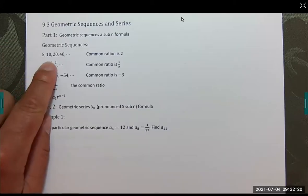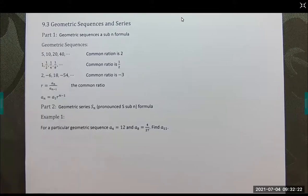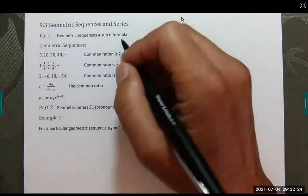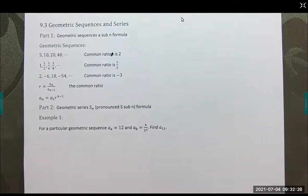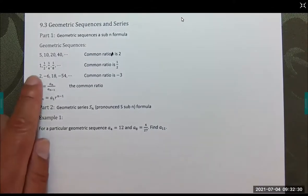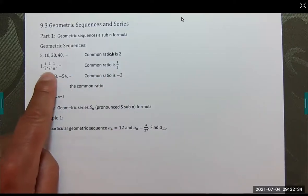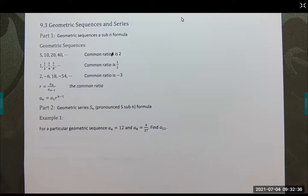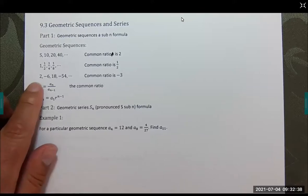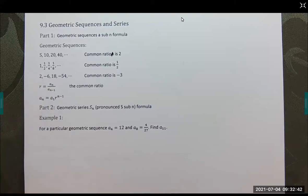Some examples of what a geometric sequence even is. You can see I'm multiplying by 2 each time. What we call a common ratio is 2 in this case. You can see in this case, we're going by one half. Half of that, half of that, half of that and so on as we go down. Here we are multiplying by negative 3.